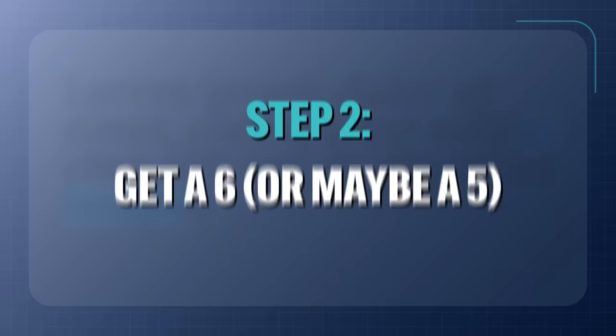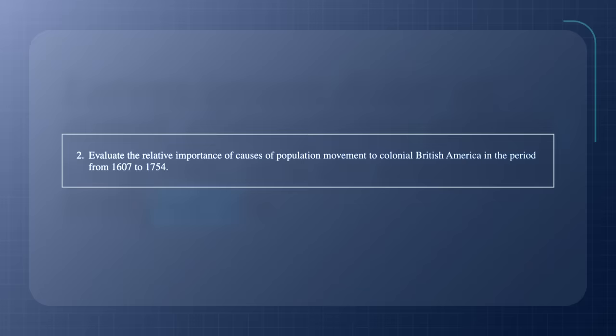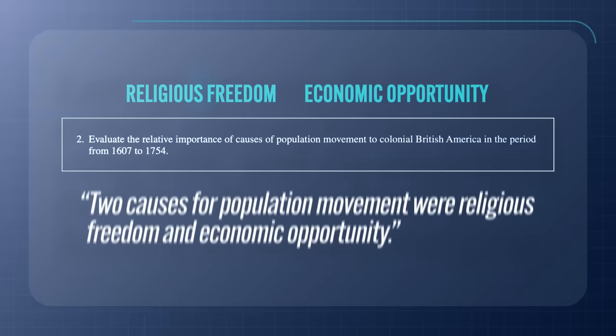Step two: get a six, or maybe a five. Now that you've understood the prompt, you need to understand the rubric and the points you can earn. There's a total of six points, but I'm going to encourage you to only aim for five — I'll explain that later. The first point is for the thesis, and you can earn up to one point. Your thesis has to do two things: first, it must be historically defensible, meaning it must make an argument and take a stand. You can't just list causes; you have to choose which one is more important.